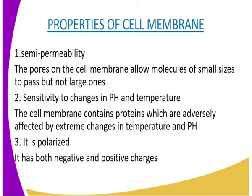The second property of the cell membrane is that it is sensitive to changes in pH and temperature. The cell membrane contains proteins which are adversely affected by extreme changes in temperature and pH. A property of protein is that it is affected by extreme changes in temperature — temperatures above 40 degrees Celsius denature the proteins. Because the cell membrane contains protein, temperatures above 40°C will cause it to be denatured. Such changes in pH and temperature alter the structure of the membrane, hence it is no longer functioning.